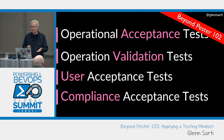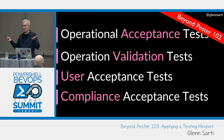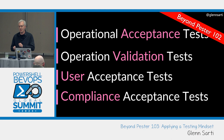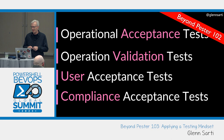I talked about four different types of acceptance tests: OAT, which asks 'do I accept that this system is able to be supported as I intended?'; Operational Validation Tests, asking 'now that I've deployed my system, can I still operate and support it the way I intended?'; User Acceptance Tests, asking 'does the system work for a user?'; and Compliance Acceptance Tests — does the system comply with regulations such as personal information or data sovereignty?